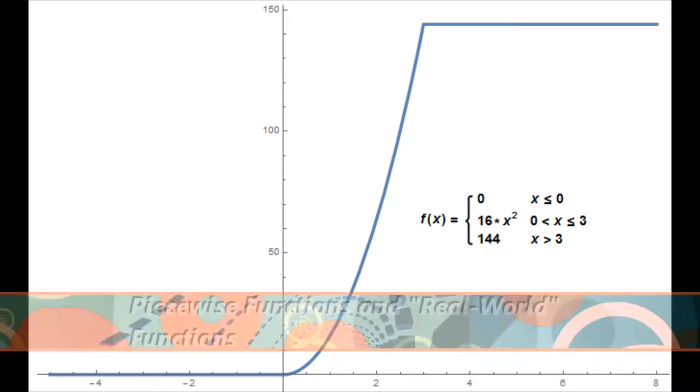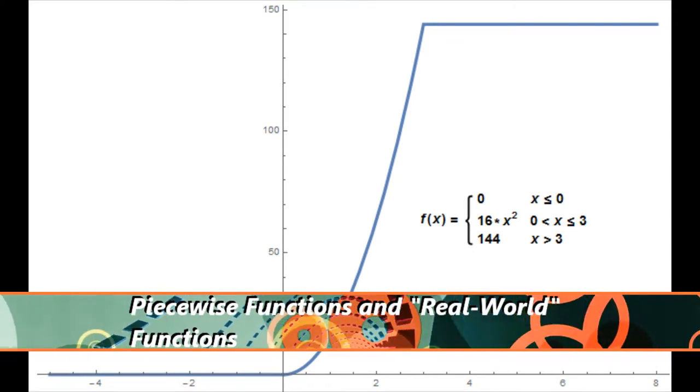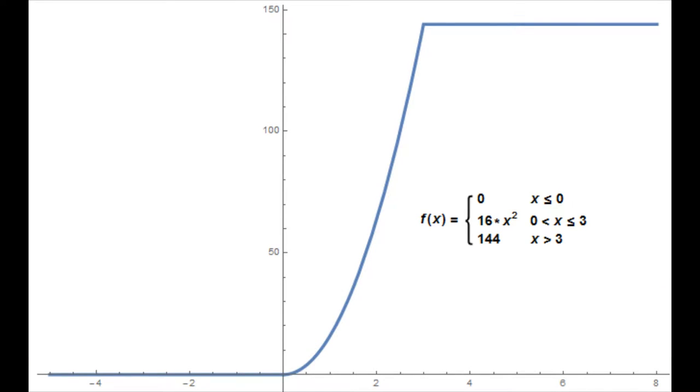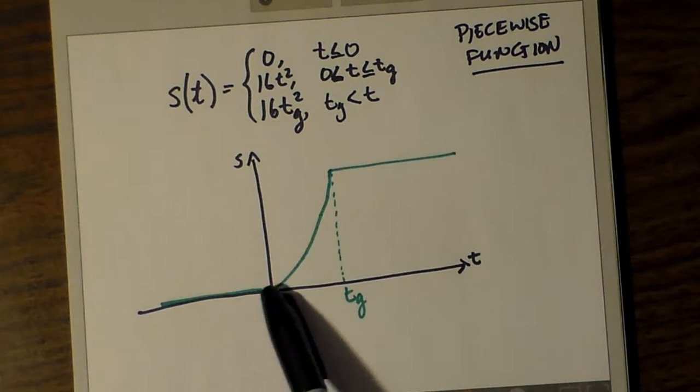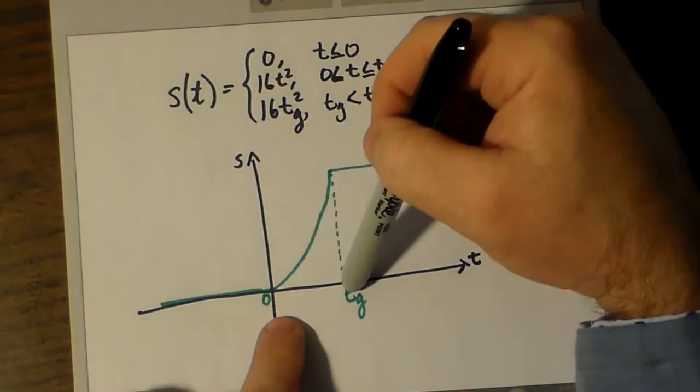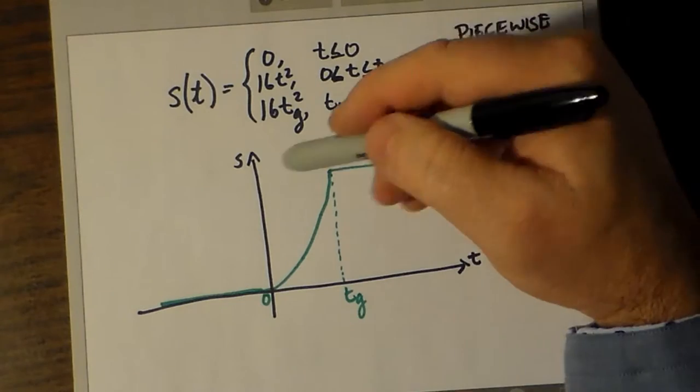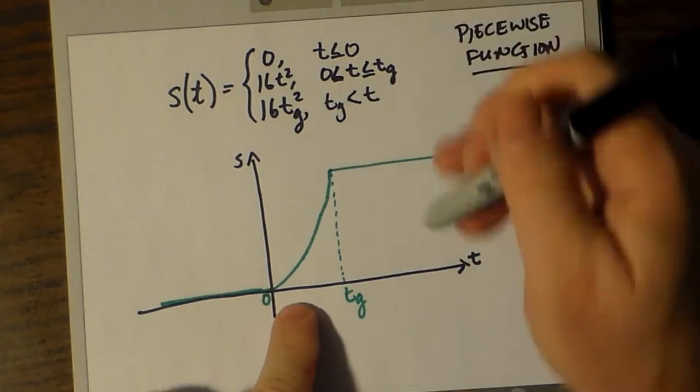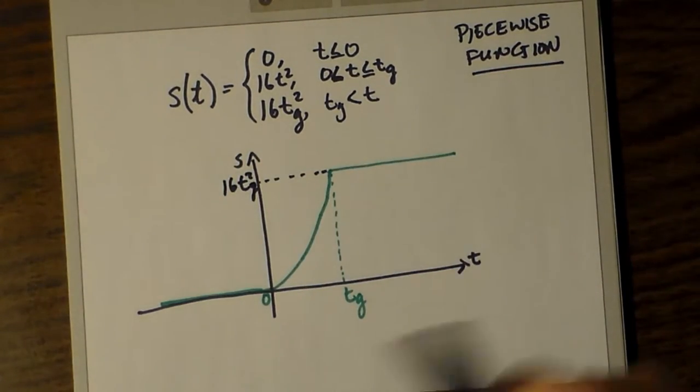For our next bit, we're going to take a look at piecewise functions. Suppose we're studying a distance which an object falls and which hits the ground after t sub g seconds. Its function may be defined as s of t equals 0 for t less than 0, 16t squared for t between 0 and t_g, which we took to be 3 in the initial graphic, and 16t_g squared for all t greater than t sub g.